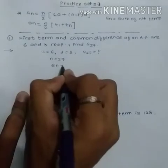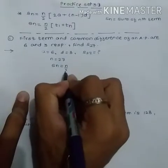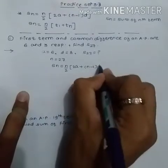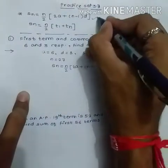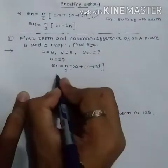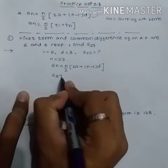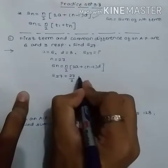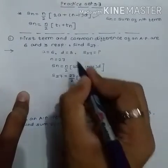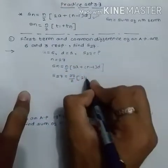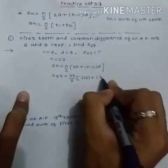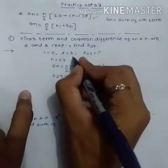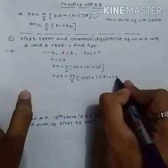We use the first formula: Sn = n/2 × (2a + (n−1)d). So S27 = 27/2 × (2a + (n−1)d). Putting n = 27, a = 6, d = 3: S27 = 27/2 × (2×6 + (27−1)×3) = 27/2 × (12 + 26×3).